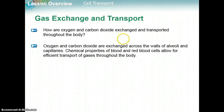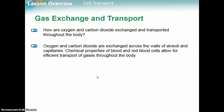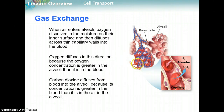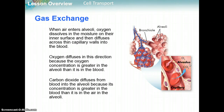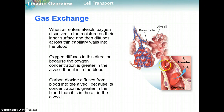Oxygen and carbon dioxide are exchanged across the walls of the alveoli and the capillaries. Chemical properties of the blood and red blood cells specifically allow for the efficient transport of these gases. When air enters the alveoli, oxygen dissolves in the moisture on their inner surface and then diffuses across the capillary walls into the red blood cell — because oxygen is more concentrated in the alveolus and less concentrated in the red blood cell, oxygen molecules naturally diffuse from high concentration to low concentration.